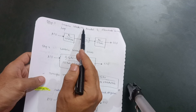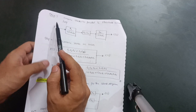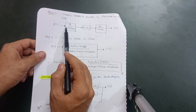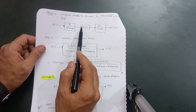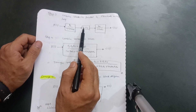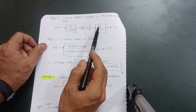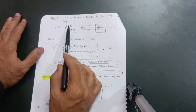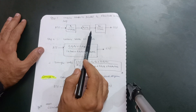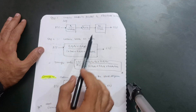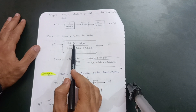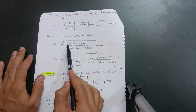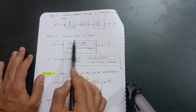This is Step 3: combining blocks in parallel and eliminating the minor loop. I combine the minor loop using the formula G(s) / (1 + G(s)·H(s)), then combine the two parallel blocks by simply adding them: G2 + G3. The result is G4 / (1 + G4·H1) as before. Finally, since the remaining blocks are in series, I combine them by multiplying: G1 · (G2 + G3) · G4 / (1 + G4·H1).